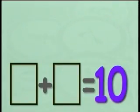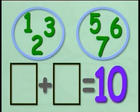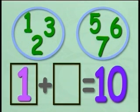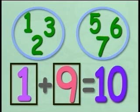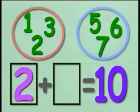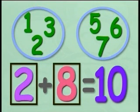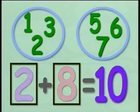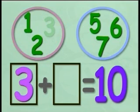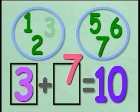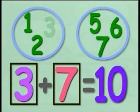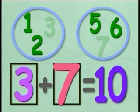Fill in the boxes with the correct numbers from the circles. If we choose one from the circle on the left, we must add it to nine to get ten. There is no nine in the circle on the right. If we choose two from the circle on the left, we must add it to eight to get ten. There is no eight in the circle on the right. If we choose three from the circle on the left, we must add it to seven to get ten. Yes, there is a seven in the circle on the right. The answer is three plus seven equals ten.